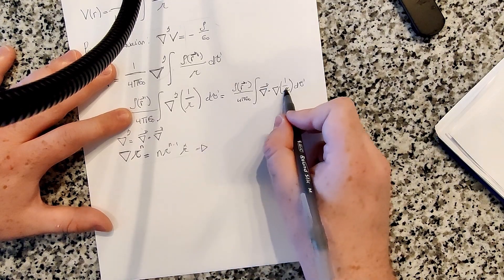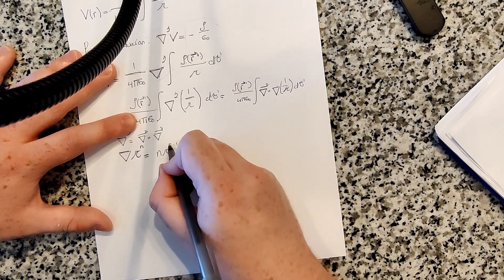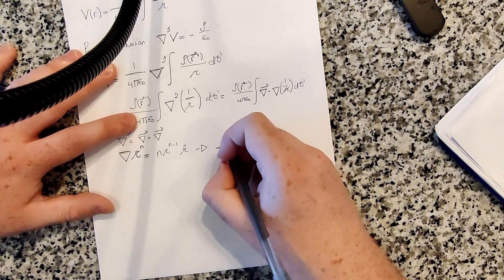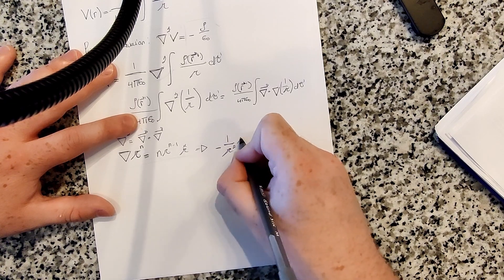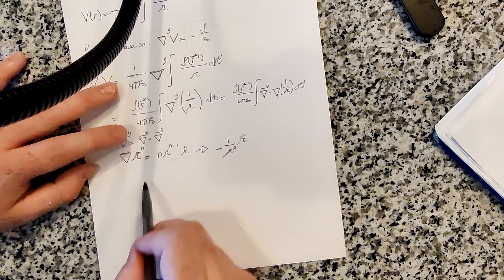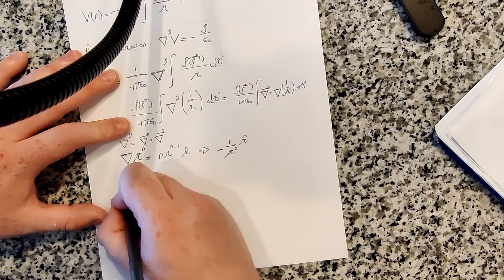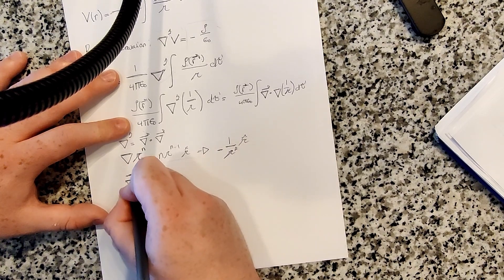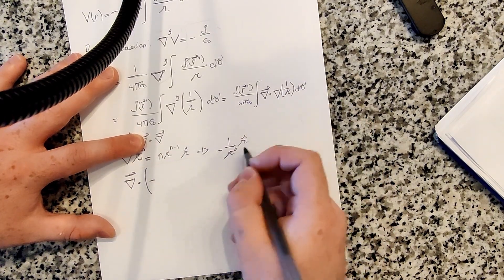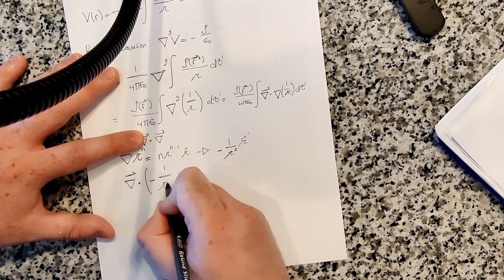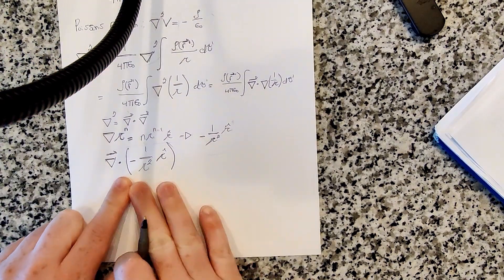And so in our case, n is minus 1. So what we get is, if n is minus 1, we get minus 1 times r to the minus 1 minus 1. So r to the minus 2. So we get minus 1 over r squared r hat vector. So that's what the gradient of this gives us. So then what we have to evaluate is the divergence of this. We have to calculate the divergence of the gradient of that. So the gradient of this, you have to calculate the divergence of this, right? So that's what it comes down to.